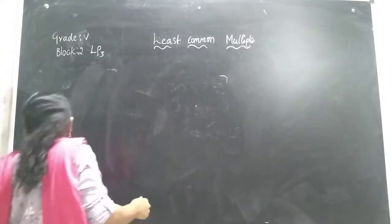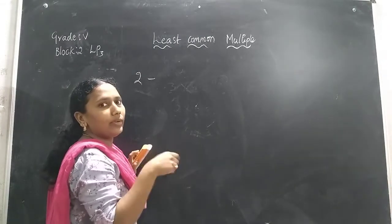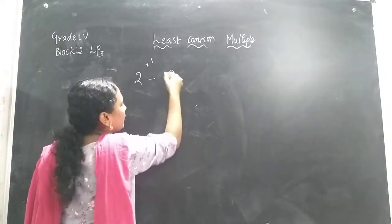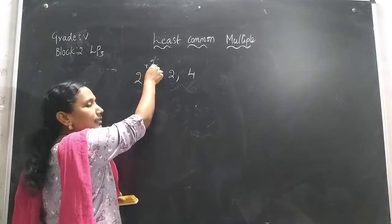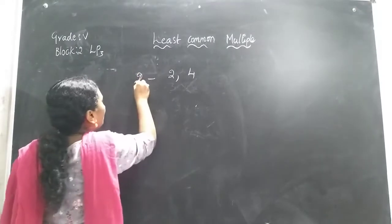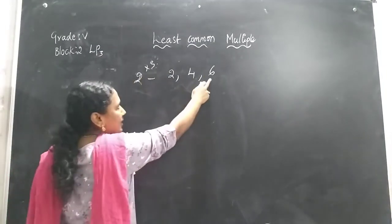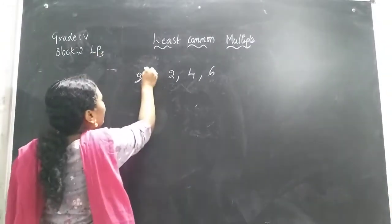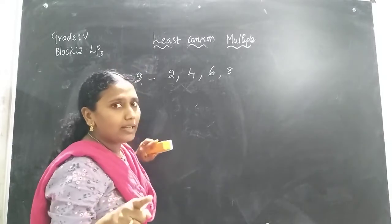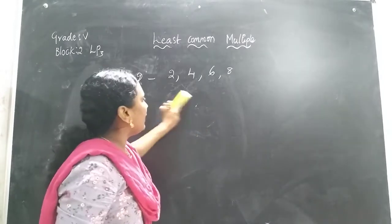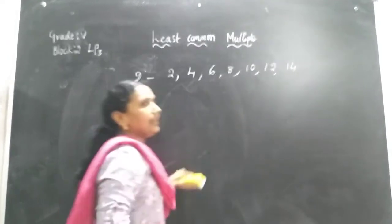We will see what are the multiples for the number 2. For 2, I have to write the multiples. If I multiply 2 with 1, I get 2. With 2, I get 4. With 3, I get 6. With 4, I get 8. And so on: 10, 12, 14. Like that we can go on.